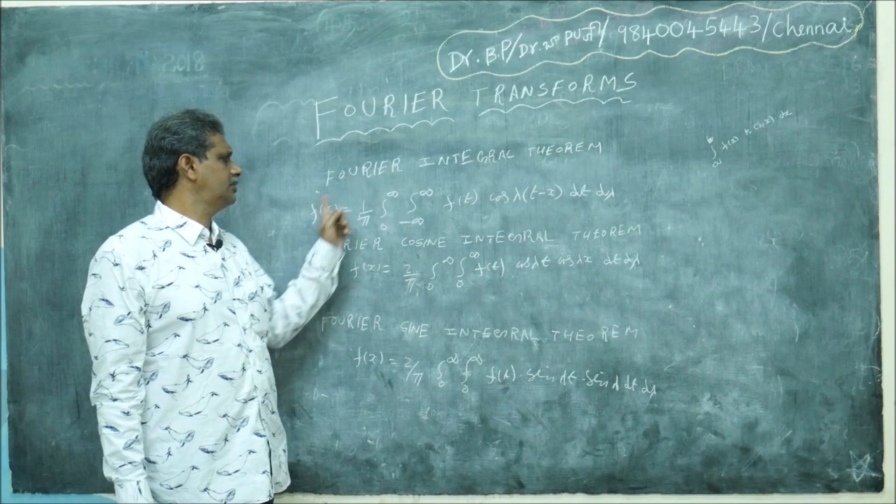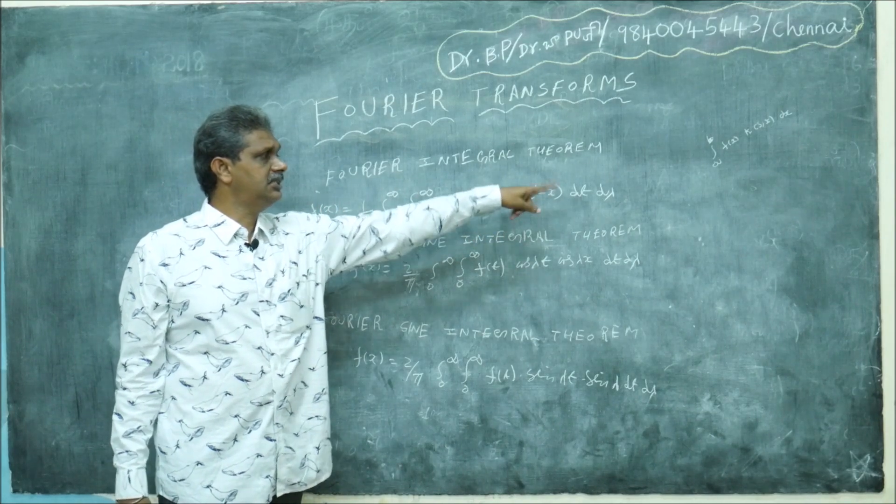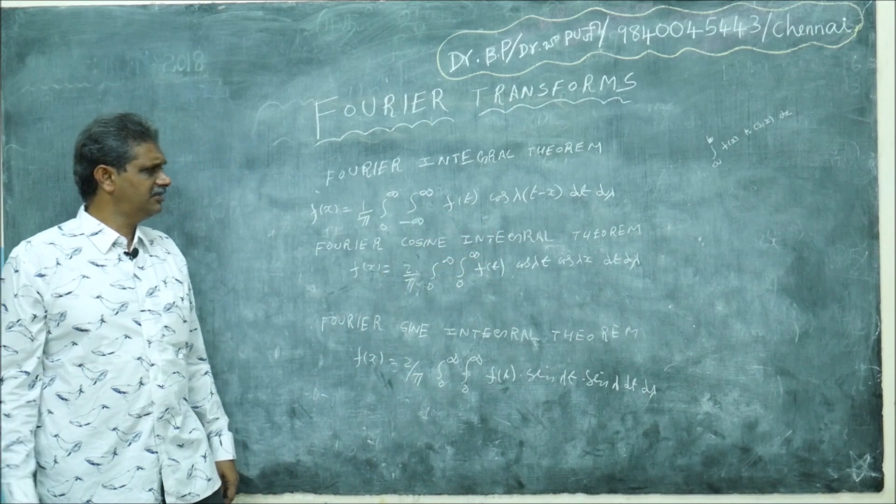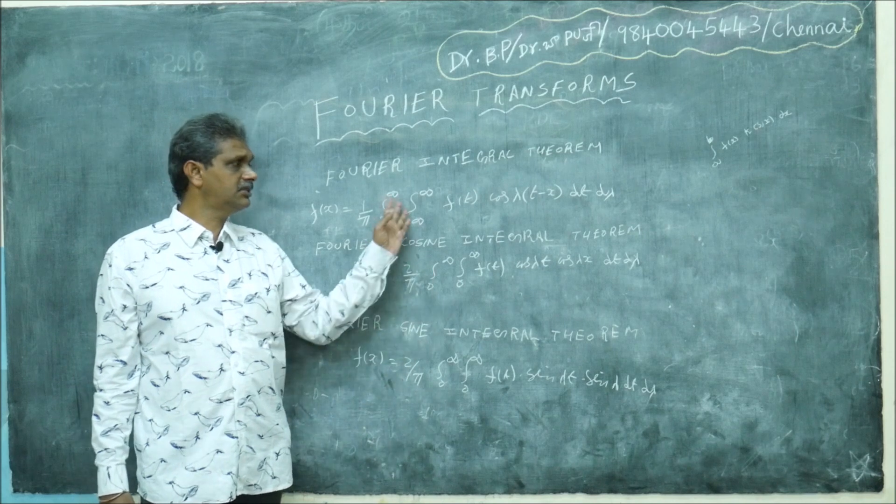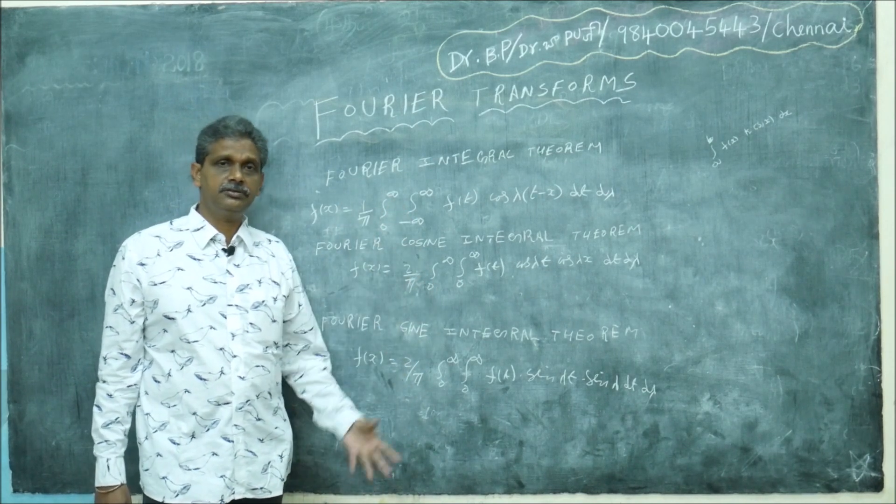f(x) = (1/π) ∫₀^∞ ∫₋∞^∞ f(t) cos[λ(t-x)] dt dλ. This is called the Fourier integral theorem. Previously they did many problems. Nowadays the syllabus is not including this, but I'll provide it in addition. If anyone requires, we'll do the problems—there are three or four very beautiful problems there.